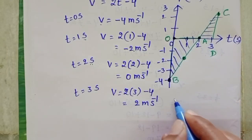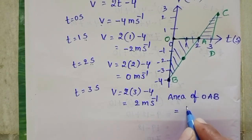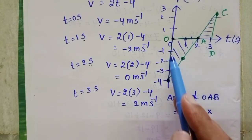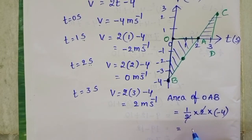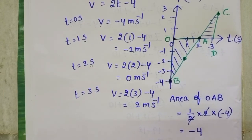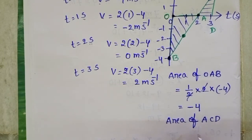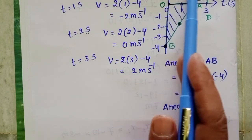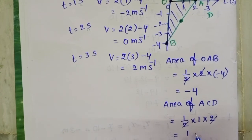Area of triangle OAB = half times base (0 to 2 = 2 seconds) times height (minus 4), giving minus 4 meters. Area of triangle ACD = half times base (2 to 3 = 1 second) times height (2 m/s), giving 1 meter.